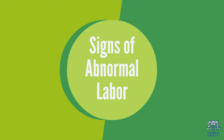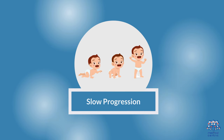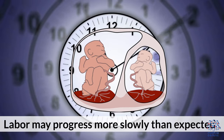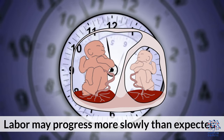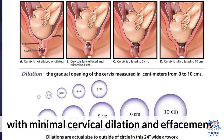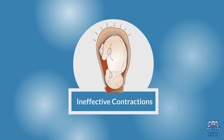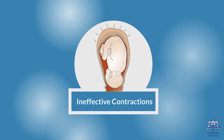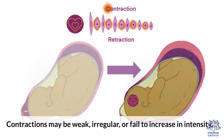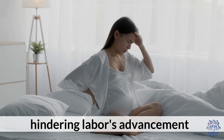Signs of abnormal labor. 1. Slow progression: labor may progress more slowly than expected, with minimal cervical dilation and effacement. 2. Ineffective contractions: contractions may be weak, irregular, or fail to increase in intensity, hindering labor's advancement.